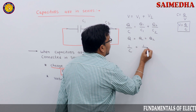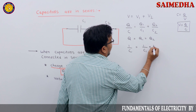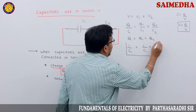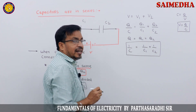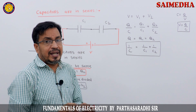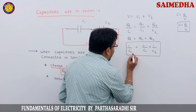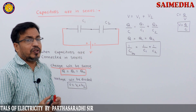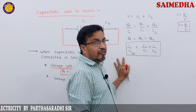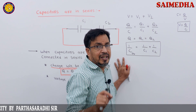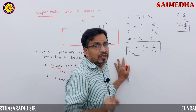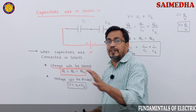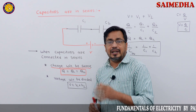Applying the condition that charge is the same — Q equals Q1 equals Q2 — and cancelling charge, we get: 1 by C equivalent equals 1 by C1 plus 1 by C2. This is the formula. When two capacitors are connected in series, charge will be same and voltage will be divided.